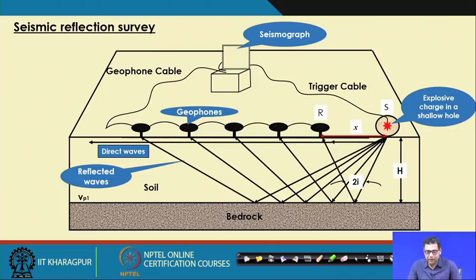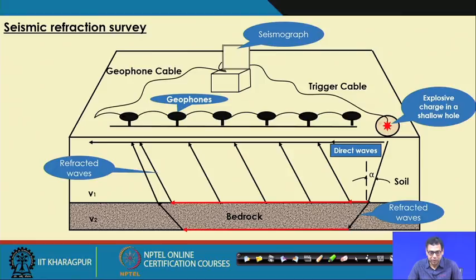This method has several limitations: we have to note the travel time of two rays — one is the direct ray and another is the reflected ray — and this method is suitable for homogeneous soil. If there is layered soil and determination of the two different waves is sometimes very difficult, then we go for the seismic refraction survey, which is more popular compared to the seismic reflection survey.